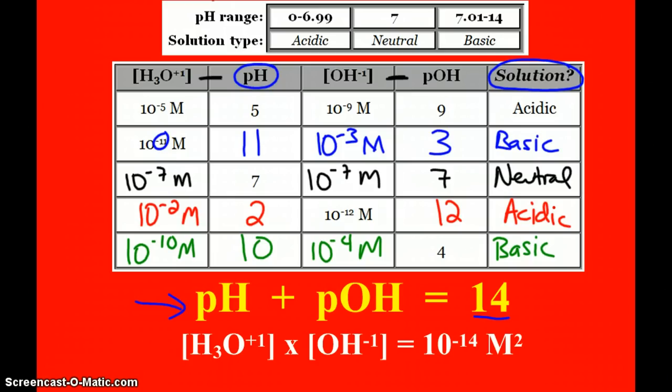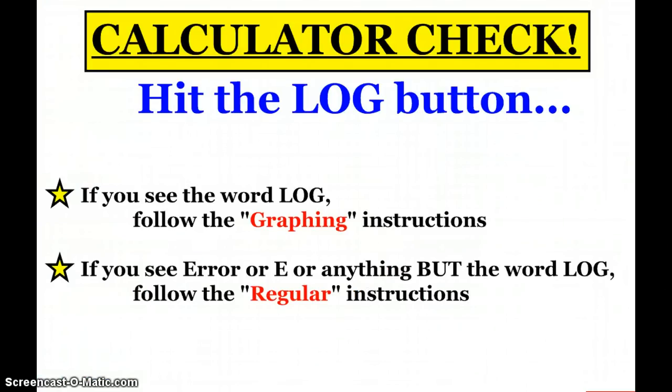6 powers of 10 is a million. 9 powers of 10 is a billion. 12 powers of 10 is a trillion. So 0 to 14, 14 powers of 10, that's 100 trillion when it comes to the concentration changes. That's quite impressive. So we have a ton of different answers, numbers, mathematically, that we can have for the concentrations within that scale. So that's why we have to use the log.